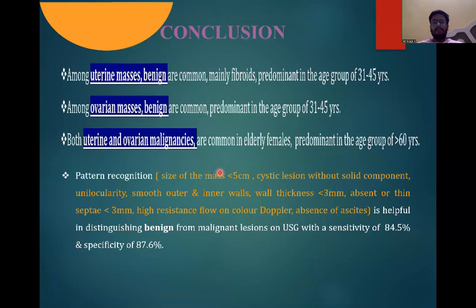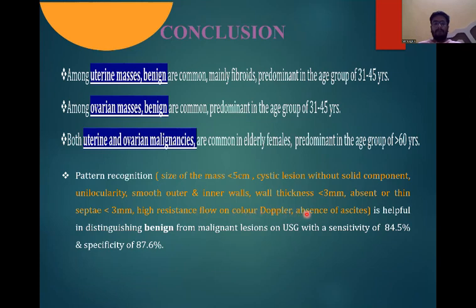Conclusion: among uterine masses, benign lesions are common — mainly fibroids, predominantly in the age group of 31 to 45 years. Among ovarian masses, benign lesions are also common, predominantly in the age group of 31 to 45 years. Both uterine and ovarian malignancies are more common in patients above 46 years. Key CT features include mass size greater than 5 cm, thick septa or wall over 3 mm, solid components, and internal architecture.